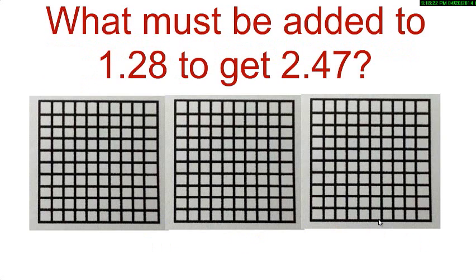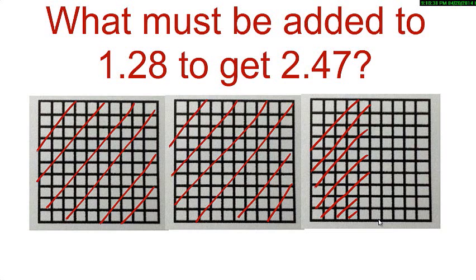What must be added to 1.28 to get 2.47? First, represent 2.47 on your grid by taking 3 grids. Shade 2 whole grids and 47 squares with any one color. So, right here I have shaded 2.47.